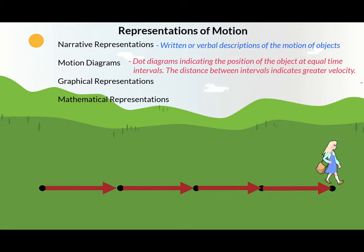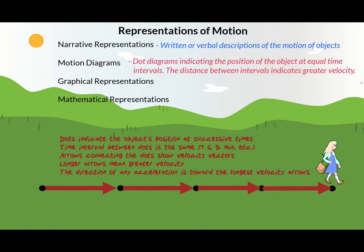The motion diagram shows she walked at a constant speed to the right for two minutes. These are very useful in understanding what is happening in a problem and what needs to be done to solve it. The critical component of a motion diagram is that the amount of time between each dot is the same.